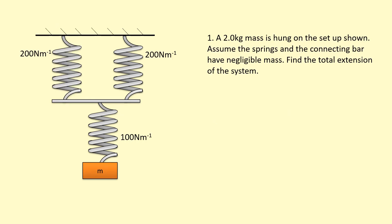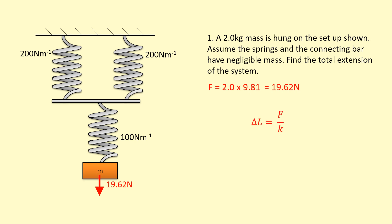In this example, a two-kilogram mass is hung on the setup shown. We have two springs in parallel at the top, each with a spring constant of 200 N/m, and one spring in series at the bottom with a spring constant of 100 N/m. First, the weight: 2 × 9.81 = 19.62 N. Using Hooke's Law rearranged for delta-l, the bottom spring carries the full 19.62 N, giving an extension of 0.1962 m.